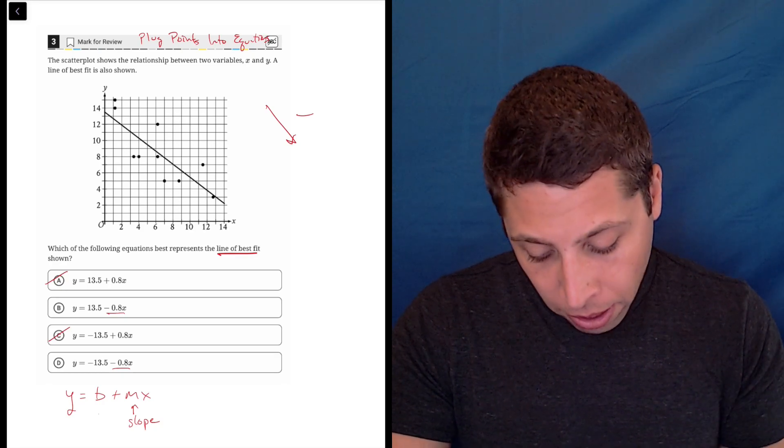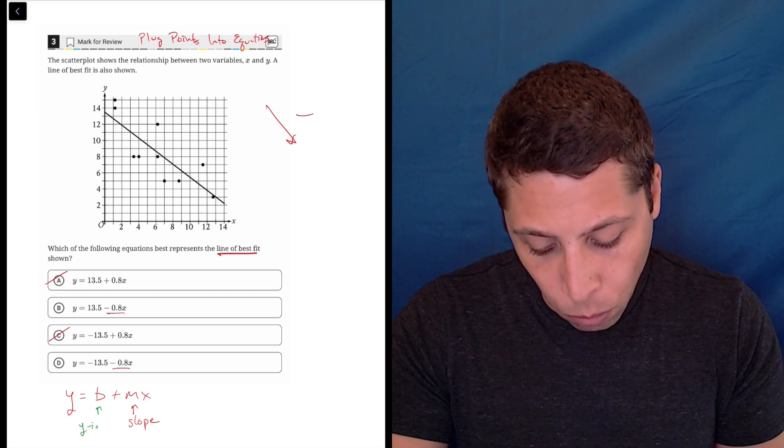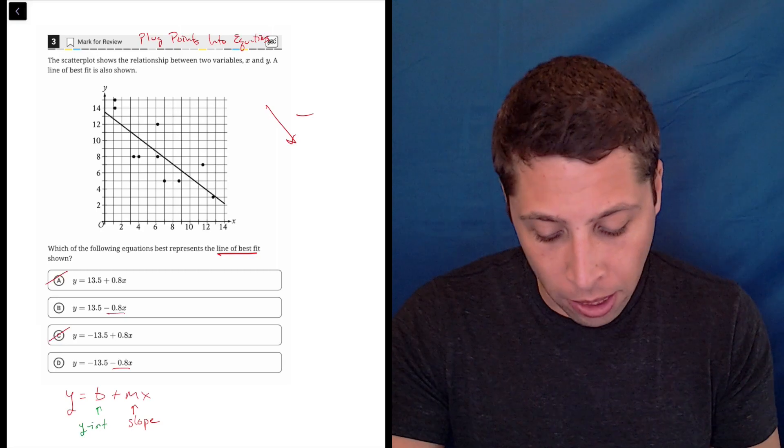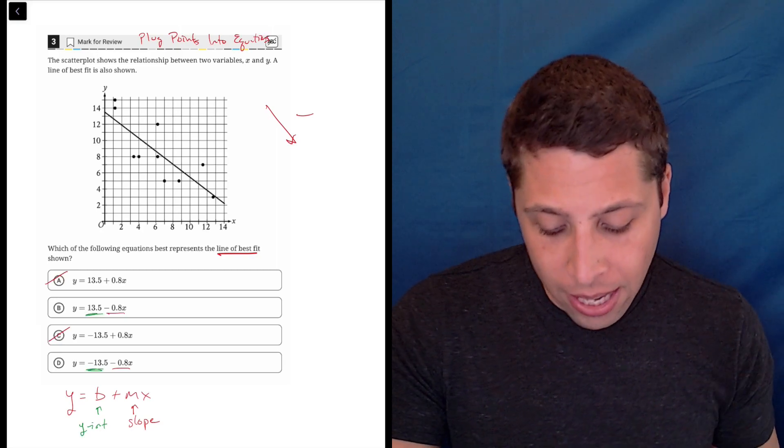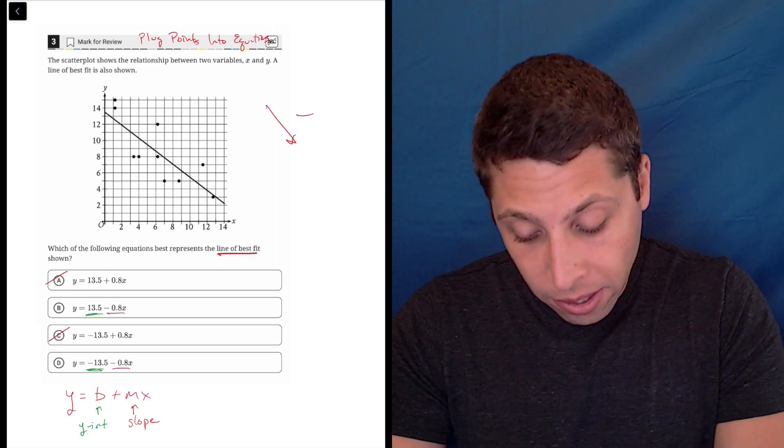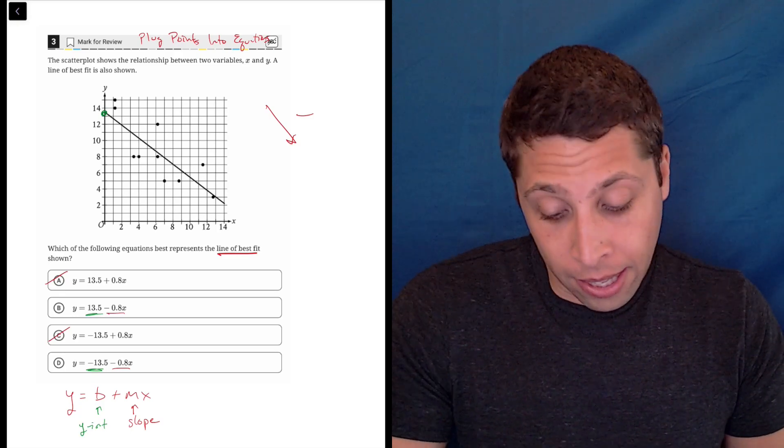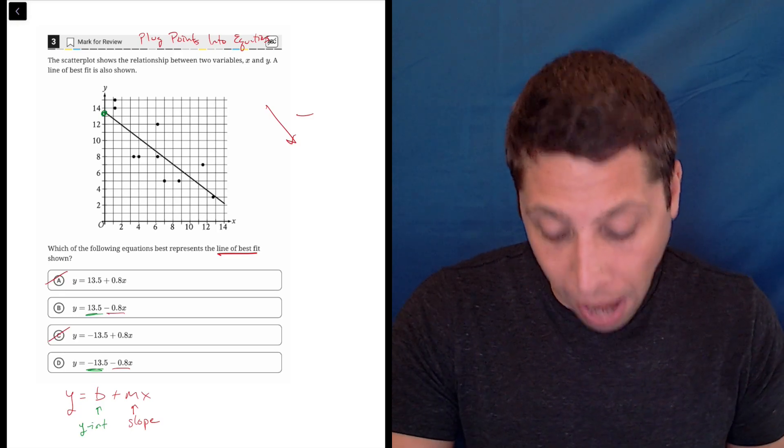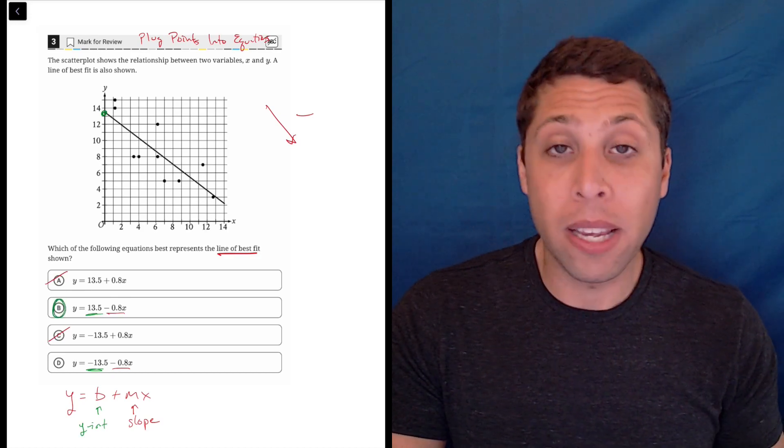Similarly, I can think about the b portion, which is the y-intercept. And again, I don't need to calculate it because the only difference now between choice B and choice D is the negative. So where does it hit the y-axis? It's on the positive side, right? This whole thing is the positive x and y. So it's positive 13.5, so B is the answer.